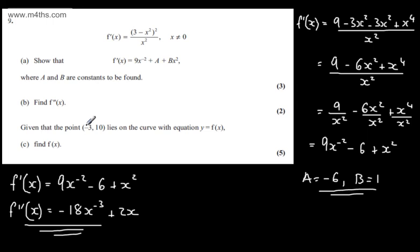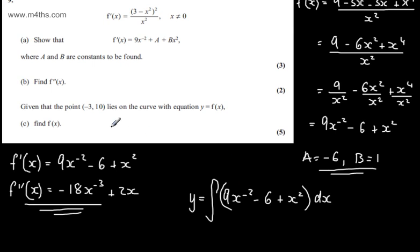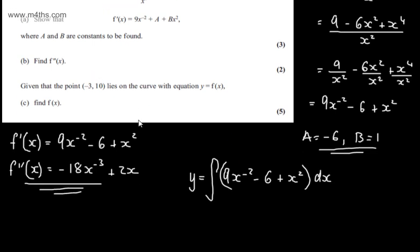Given that the point (minus 3, 10) lies on the curve with equation y equals f(x), in part c we're asked to find f(x). The question carries five marks. So y will be equal to the integral of the gradient function. I'm going to work with what I've already found, so y equals the integral of 9x to the minus 2, minus 6, plus x squared, with respect to x. This will allow us to find y in terms of x, then plug the values in to find c, the constant of integration.